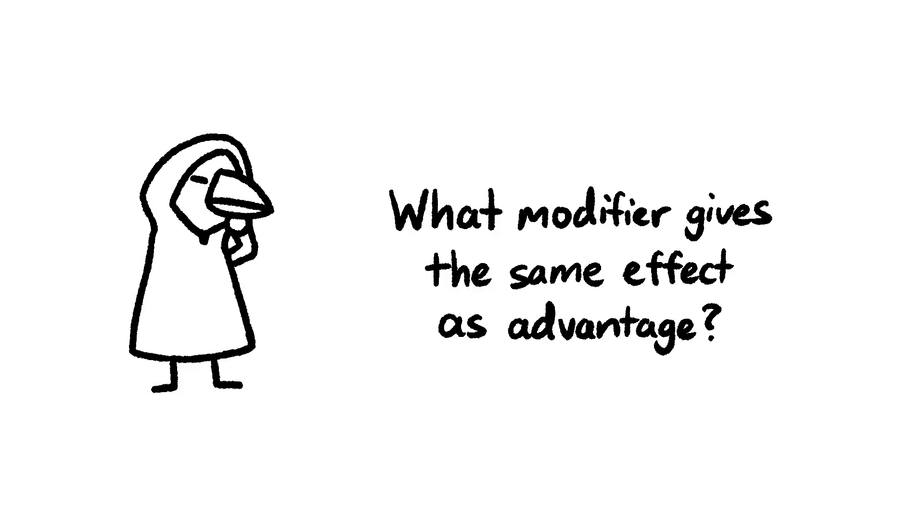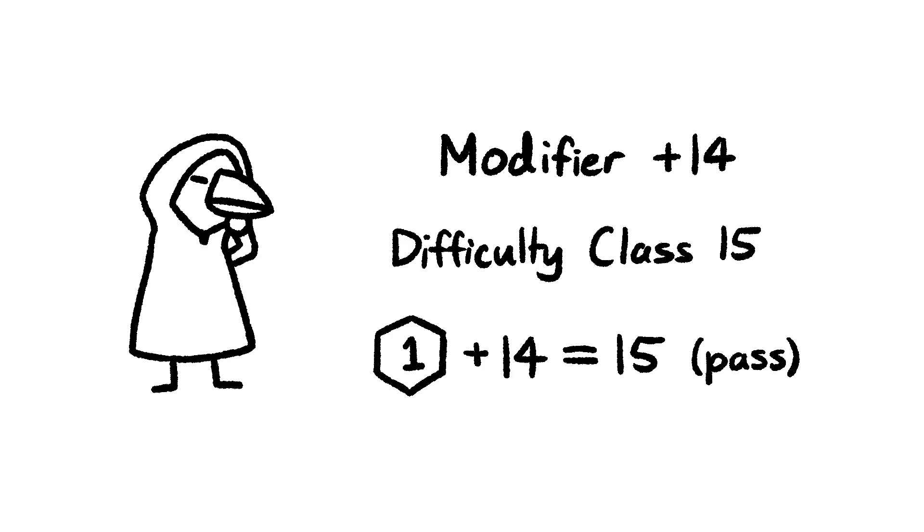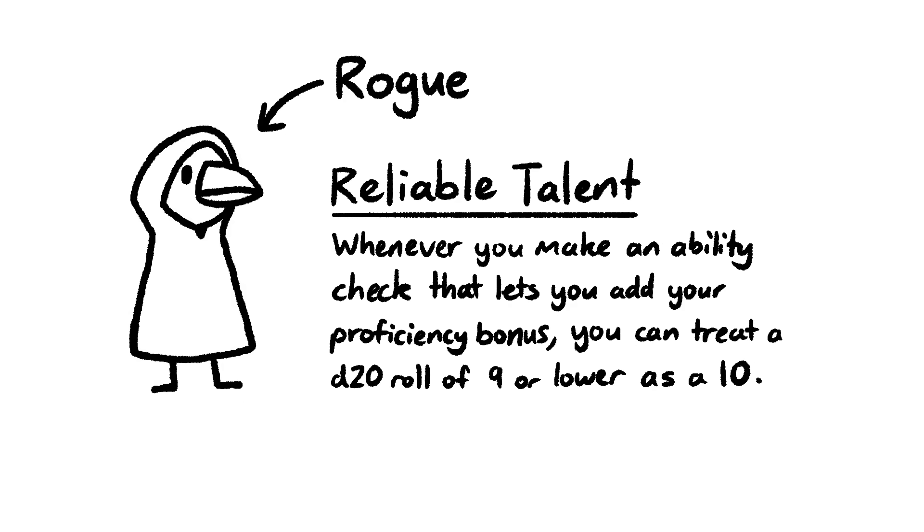One of the quirks of flat modifiers is that if you have a bonus that's big enough, it might actually be impossible to fail a check. If the difficulty class is 15 and your modifier is 14, then even if you roll a 1, you still succeed. There are actually some other mechanics in the game which can make this relatively common. But this will never happen with Advantage or Disadvantage. If both success and failure are possible initially, then they're still possible after either Advantage or Disadvantage.